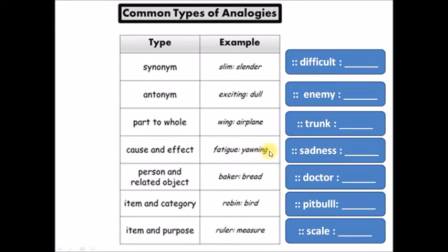Fatigue is to yawning as sadness is to crying. Another type of analogy is person and related object. Let's look at this one. Baker is to bread. What is the relationship? This object is related to the baker because a baker usually makes bread. So baker is to bread as doctor is to, what object could you use here for the doctor? For example, it could be stethoscope. Baker is to bread as doctor is to stethoscope.